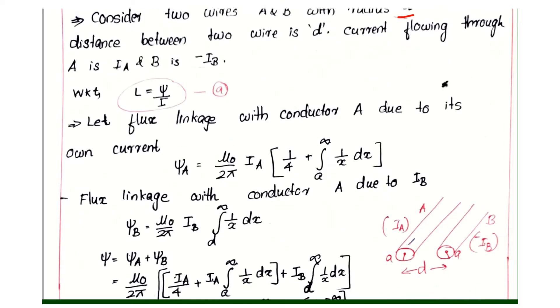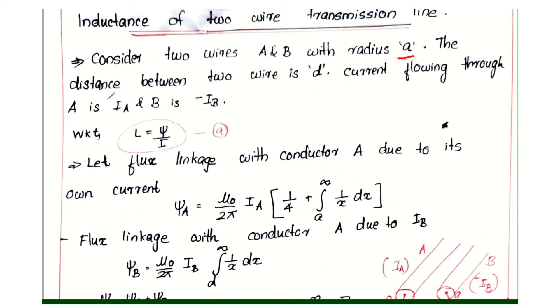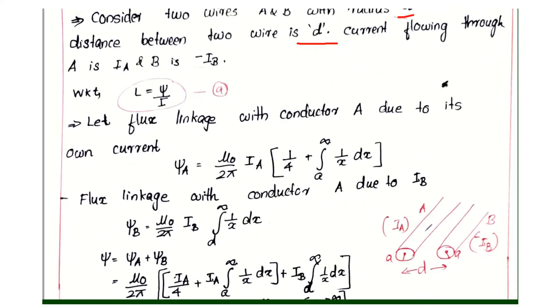Transmission lines are considered with radius a. Transmission lines A and B are separated by the distance D. The distance between the 2 wires is D.